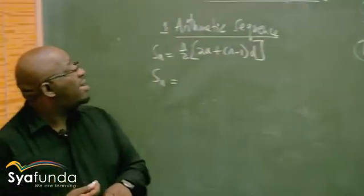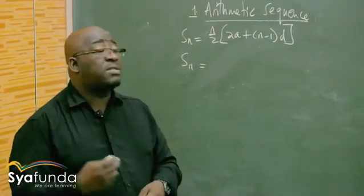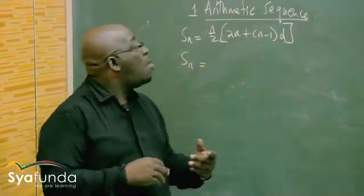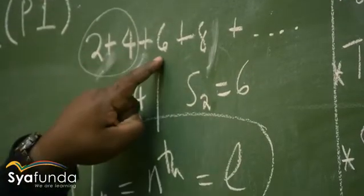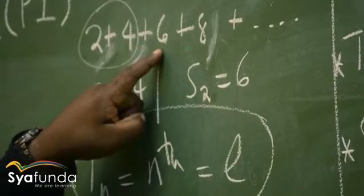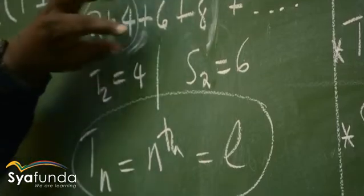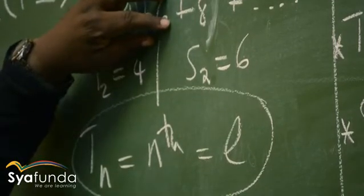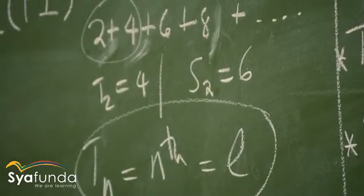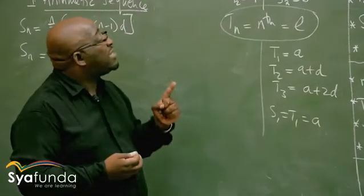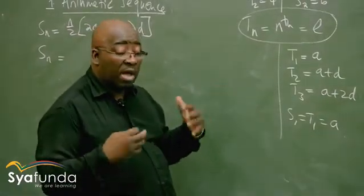What is S3 in this particular case? It is the sum of the first three terms. We already know that the first two sum to 6, so add the third one: 6 plus 6 is 12. So S3 is 12. What is S4? We add 8 to get 20. So S4 is 20. But T4 would be 8, because T4 and S4 are two different things.